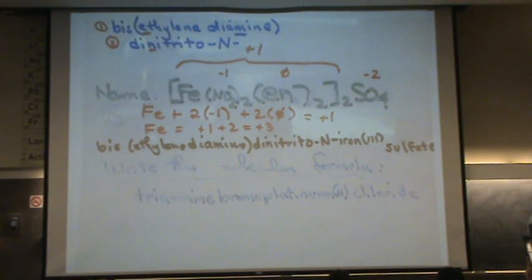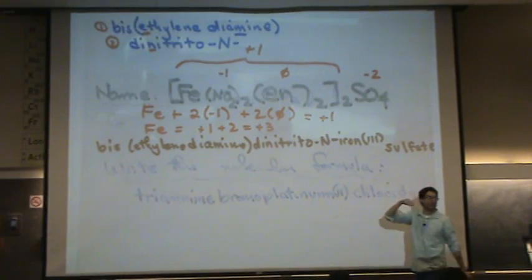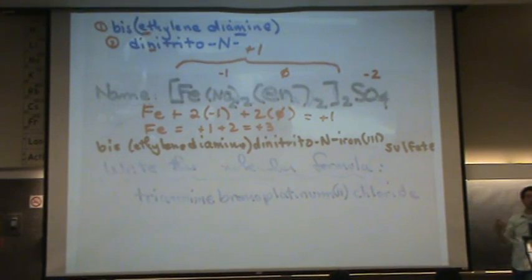So, whenever it's the nitrito, do you always do the N and the O hyphens? Oh, did you say whenever it's the nitrito? Yeah. Yeah, whenever it's the nitrito, you use the N or the O. If it says ONO, you use dash O. And I think there's another ligand that does that. I think it's the thiosulfate. No, it's the thiocyanide.